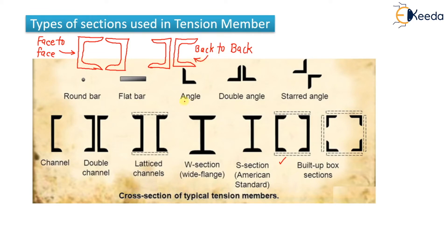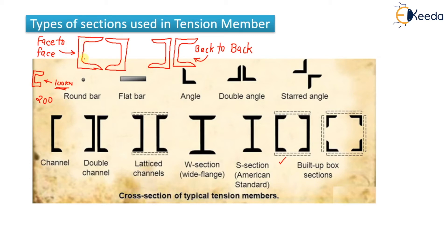Why do we use this type of section with two channels? For example, consider that you have only one channel section and its load carrying capacity is 100 kilo Newton — just as an example. But you want a capacity of at least 200 kilo Newton using only channel sections. So you place the channel sections together so that they convert into a different shape, called a built-up section — in this case a box shape.